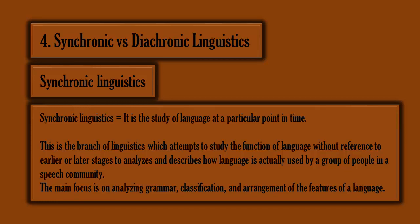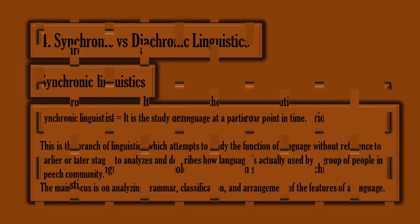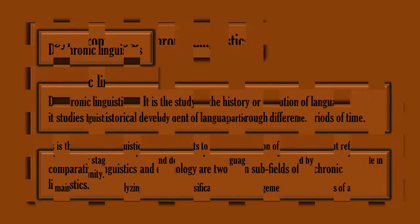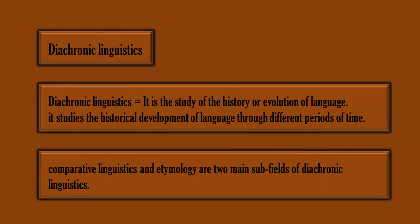The main focus of synchronic linguistics is on analyzing grammar, classification, and arrangement of the features of a language. Diachronic linguistics, by contrast, is the study of the history or evolution of language — it studies the historical development of language through different periods of time.